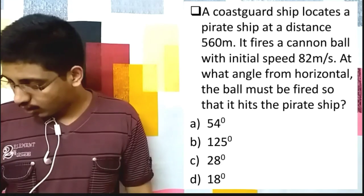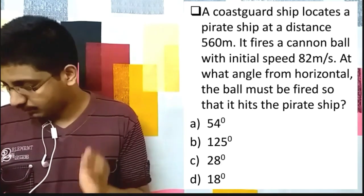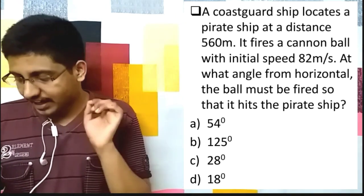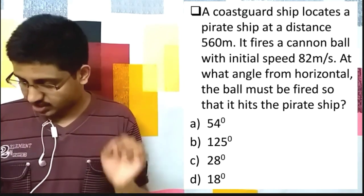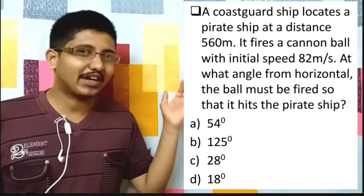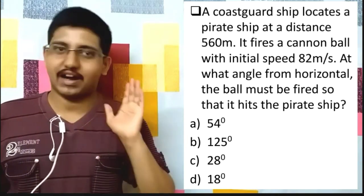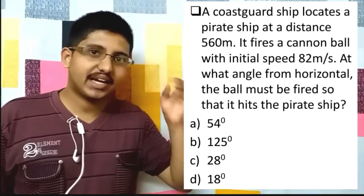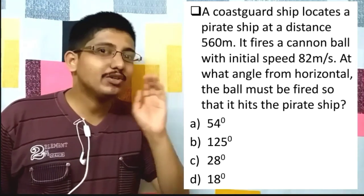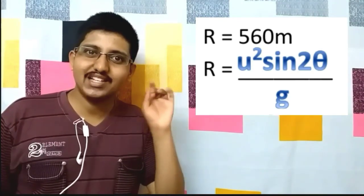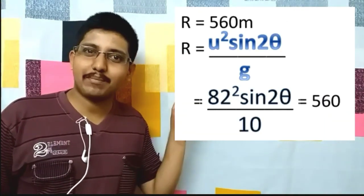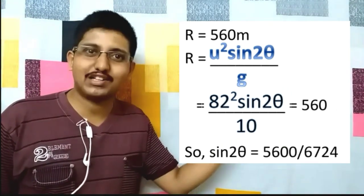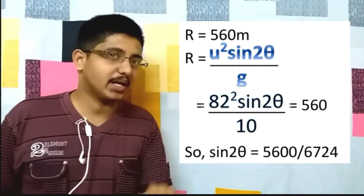Now let's read the actual physics question. A coast guard ship locates a pirate ship at a distance of 560 meters. It fires a cannon ball with an initial speed of 82 m/s. At what angle from horizontal must the ball be fired so that it hits the pirate ship? The options are 54°, 124°, 28°, and 18°. For the ball to hit the ship, the horizontal range R = u² sin 2θ / g = 560 m. So: 82² × sin 2θ / 10 = 560, giving sin 2θ = 5600 / 6724.